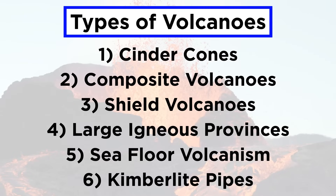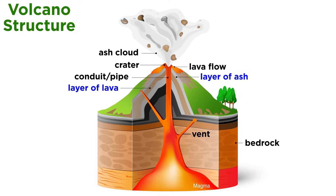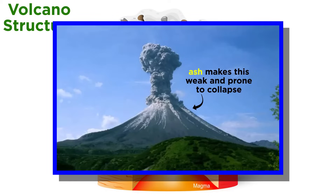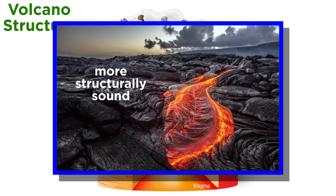Before elaborating on each type, let's talk more generally about volcanic structure and activity. Volcanoes are essentially giant piles of interlayered ash and lava flows that erupt from the volcano's vent or vents. Volcanoes that are primarily made of unconsolidated material, like ash, are very weak and prone to collapse, whereas more solid volcanoes that are mainly lava flows are more structurally sound.